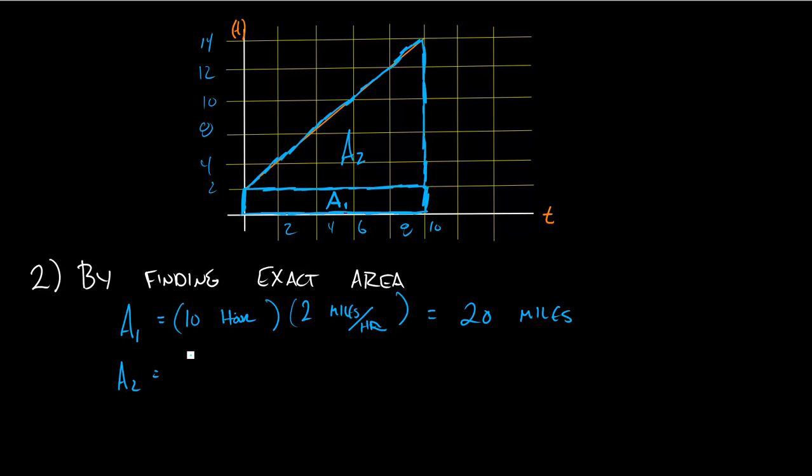Similarly, you could do A2. The area of a triangle is 1/2 base times height. So 1/2 times my base times my height. My base for A2 is again 10 hours. But my height for A2 is much bigger—it's 2, 4, 6, 8, 10. So it's 10 miles per hour, and that'll give me a total distance traveled for this area A2 of 1/2 times 100, which is 50 miles.